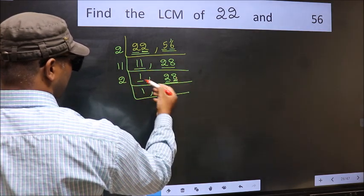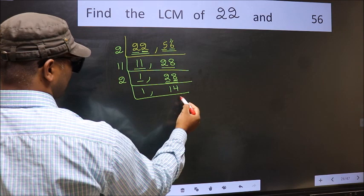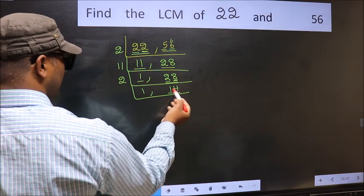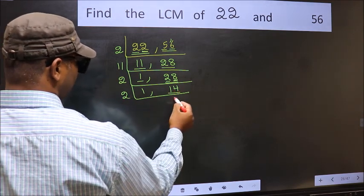The other number 8, when do we get 8 in 2 table? 2 times 4 is 8. Now here we have 14. 14 is 2 times 7 is 14.